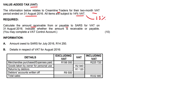Indicate whether the amount is receivable or payable, and you may complete a VAT control account — and that is exactly what we're going to do. It's the most effective method. So I'm going to teach you guys a method, the so-called SOCO method.